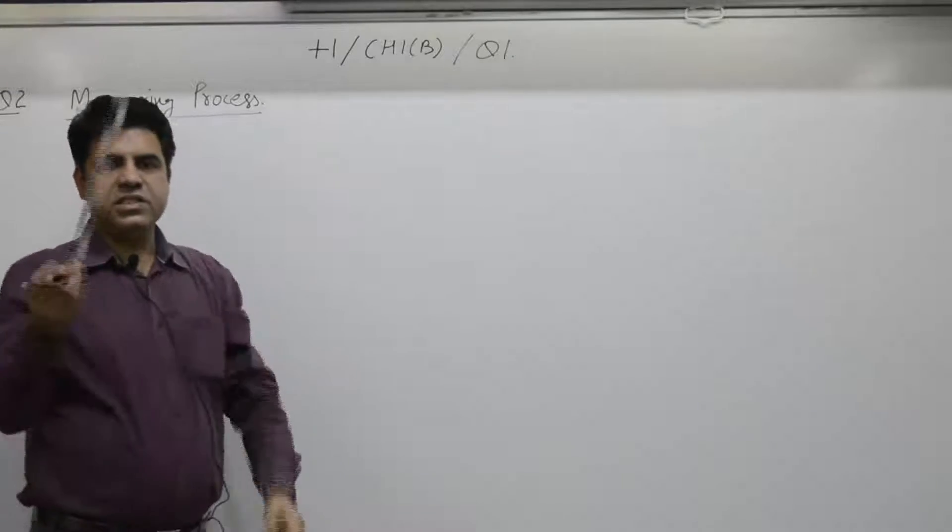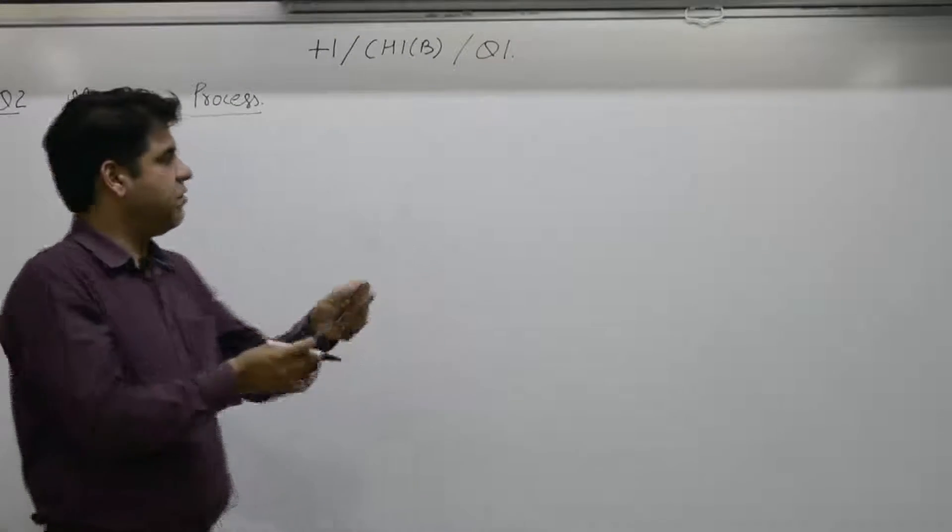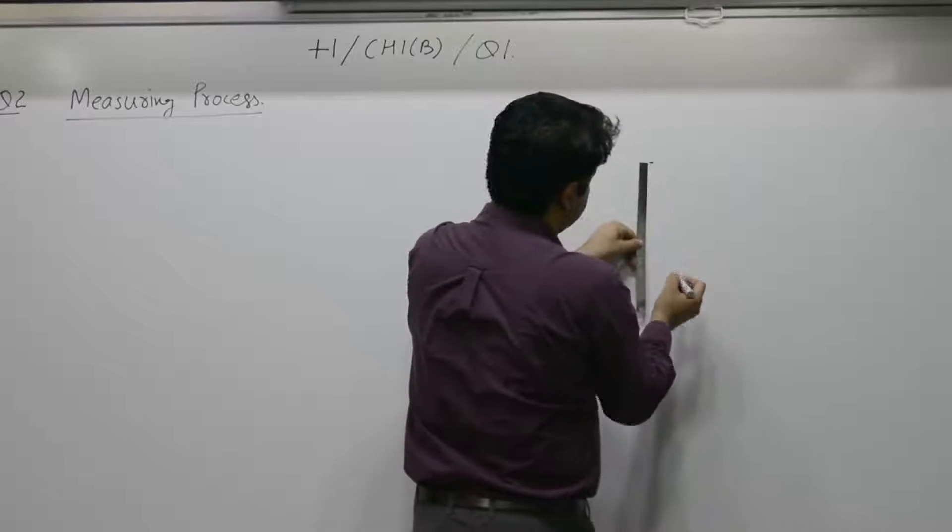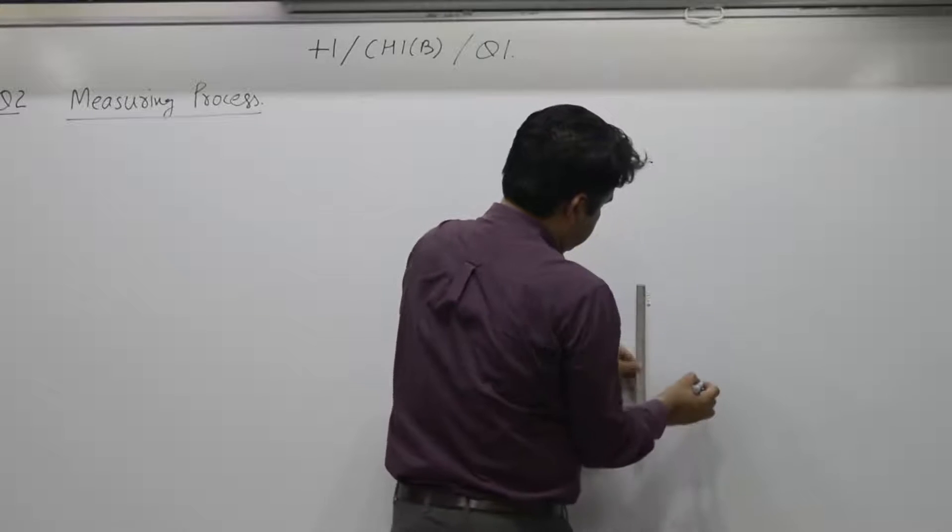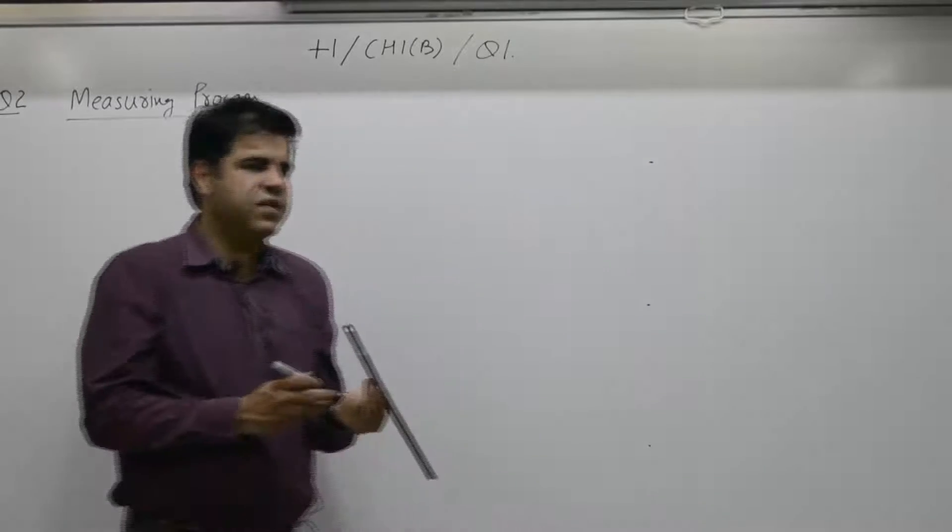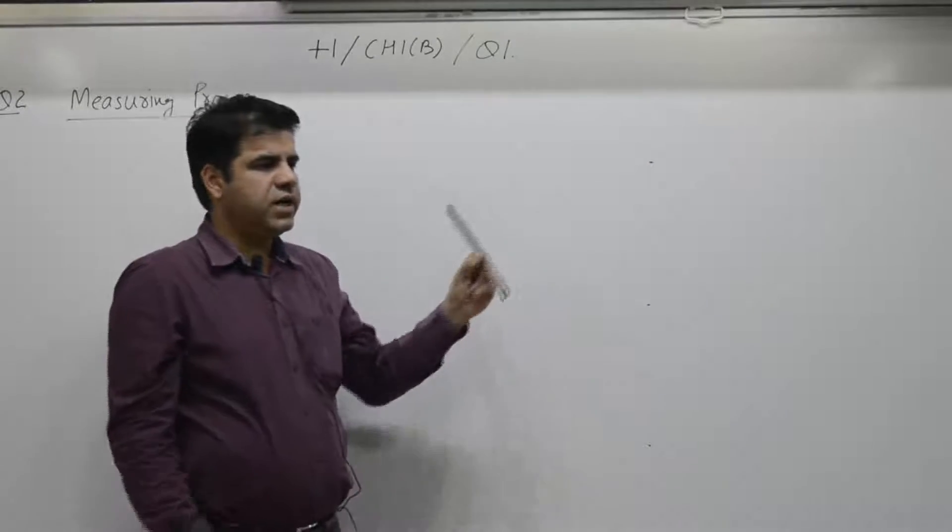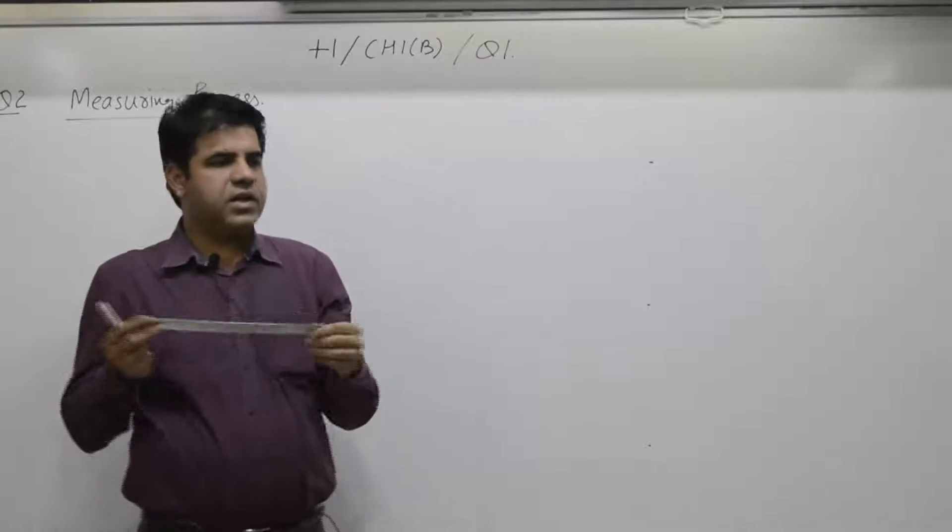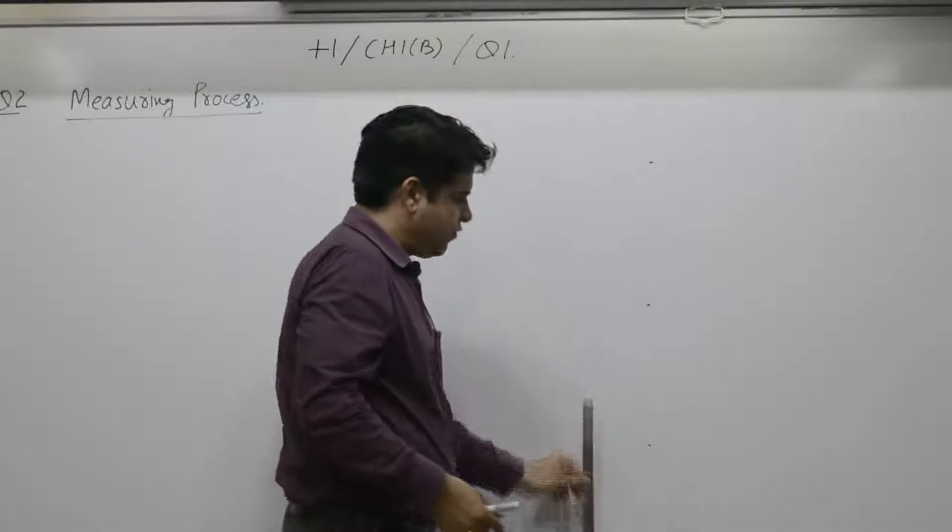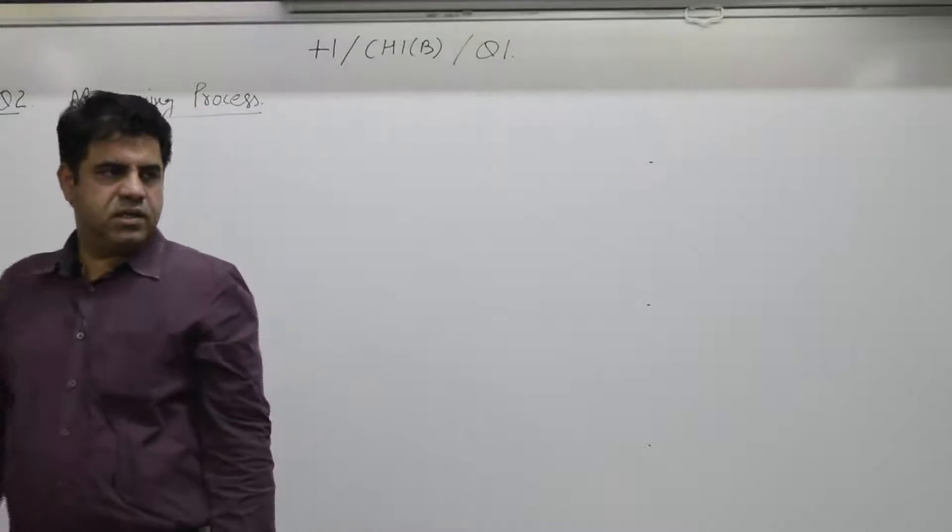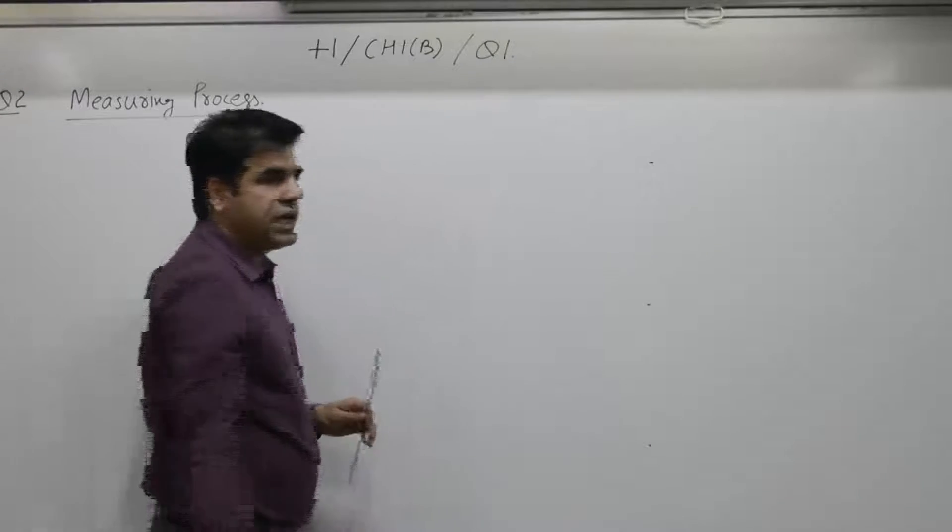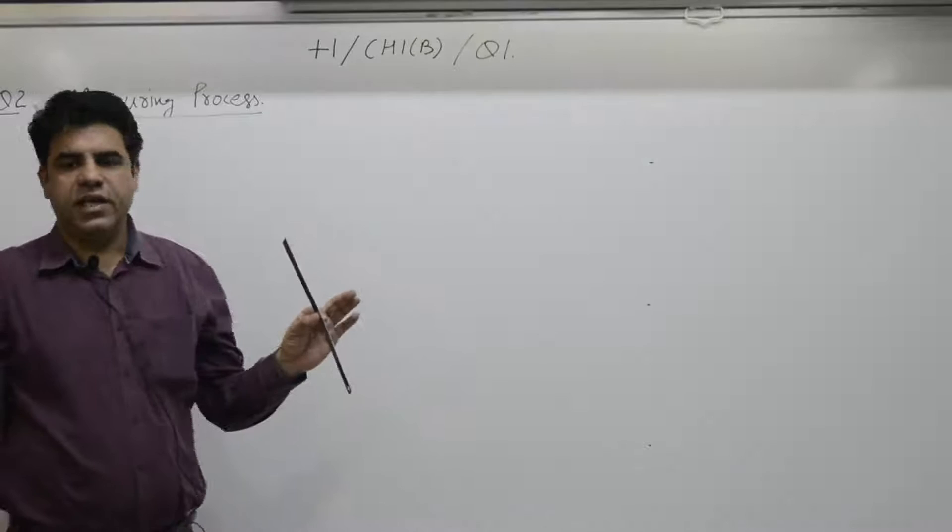So step number 1 is take a unit, choose a unit - 1 foot. This is 1, 2, 3, say 4, less than 4. So how do you go about it? Step 1 is take a unit, then see how many such units: 1, 2, 3, 4. Four such units make 1 height, so height is 4 feet. Making sense?